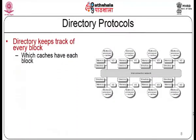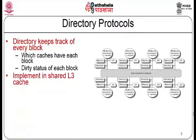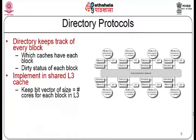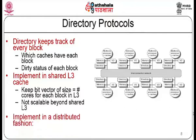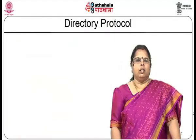In directory-based protocols, the directory keeps track of all blocks — which caches have each block and the status of each block. It is normally implemented in the shared L3 cache using a bit vector of size equal to the number of cores for each block in L3. It is not scalable beyond the shared L3 cache and can be implemented in a distributed fashion.